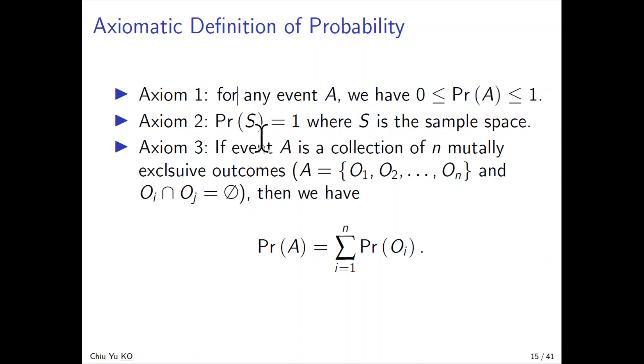The third one is the way how we combine things. If event A is a collection of n mutually exclusive outcomes, A = {O1, O2, ..., On} and they're mutually exclusive - the intercept is empty - then the probability of A is just sum of all probability. So basically saying an event, if it's a collection of outcomes that are mutually exclusive (no intersection), that basically means the probability is sum of the individual outcomes. So these look rather intuitive.